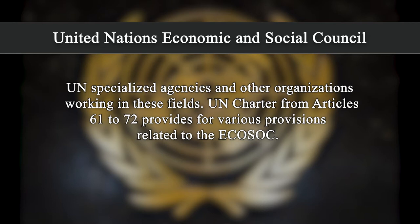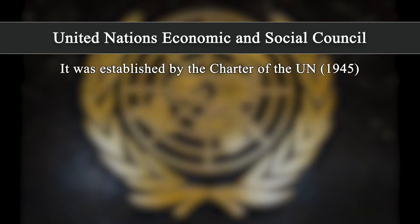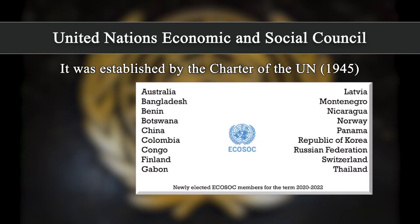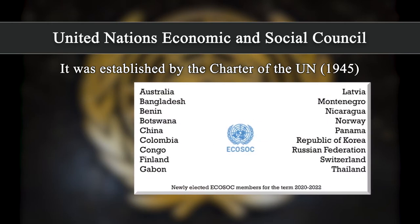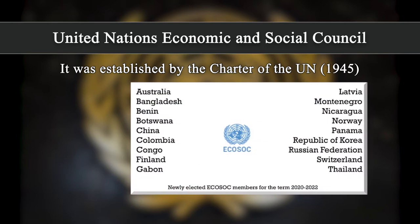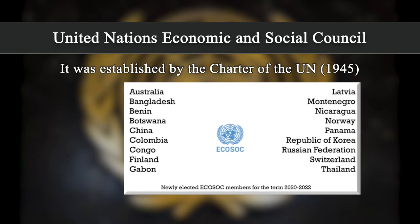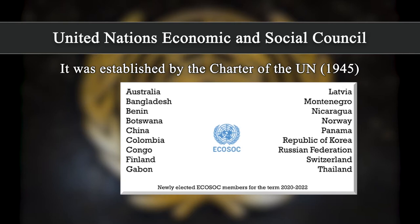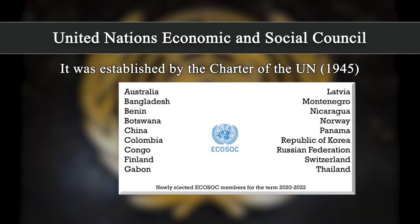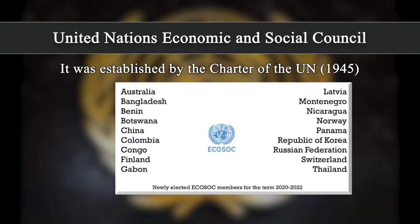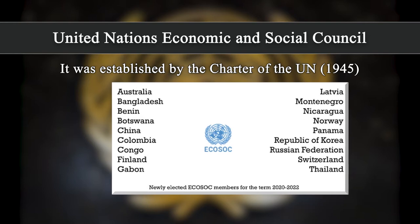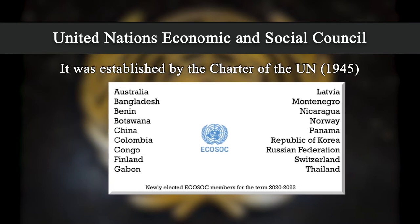The UN Charter from Article 61 to 72 provides for various provisions related to ECOSOC. It was established by the Charter of the United Nations in 1945, and the charter was amended in 1965 and 1973 to increase the membership of the Economic and Social Council from 18 to 27, and then from 27 to 54.